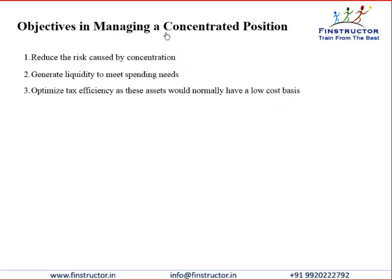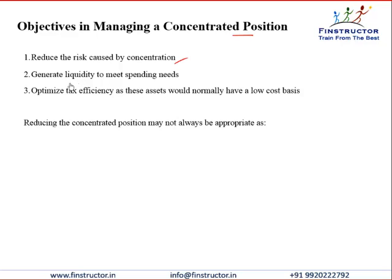What are the objectives in managing this position? First, we want to reduce the risk caused by excessive concentration. Many times we may also need money, so we may simply need to sell the asset because we need liquidity for our spending needs. A very important objective is to optimize tax efficiency, as many times these concentrated positions would have a very low cost basis. The asset may now be worth $100 but when we acquired it, it was $1, so there will be a huge tax outgo whenever we sell out this position.